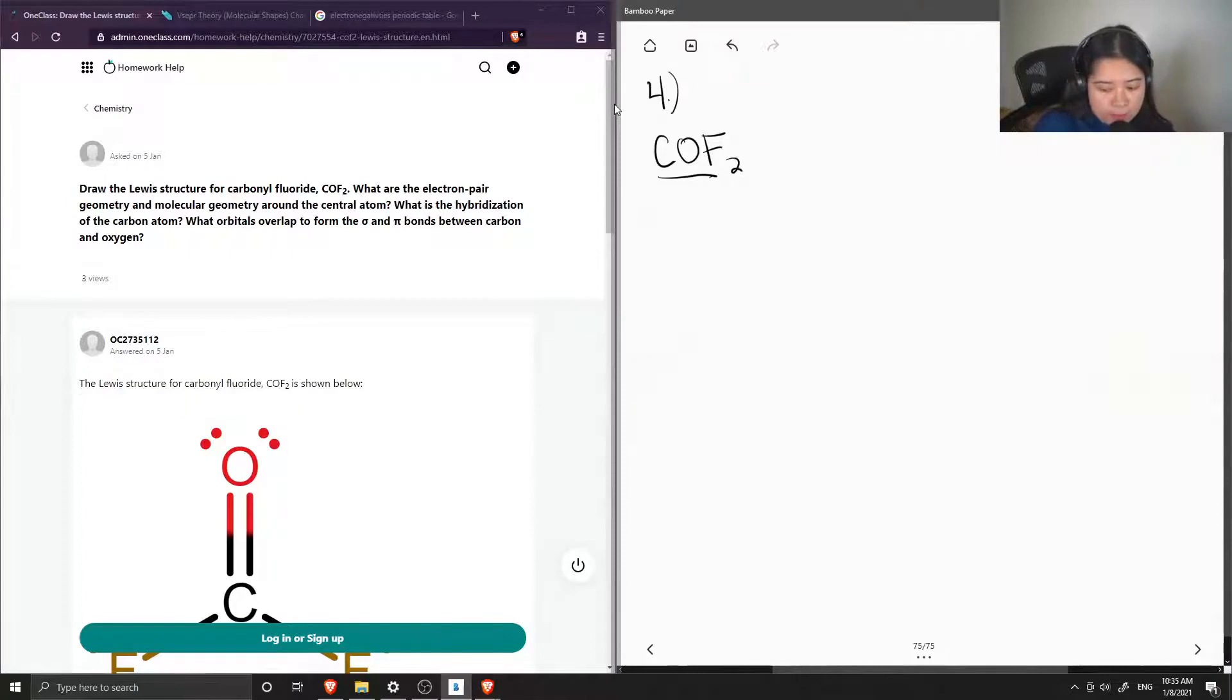Okay, so let's find the total number of valence electrons in order to help us draw our Lewis structure. So carbon has four valence electrons, oxygen has six, and fluorine has seven, and there are two fluorine atoms, so we multiply this by two and add them all up, and we get 24 valence electrons.